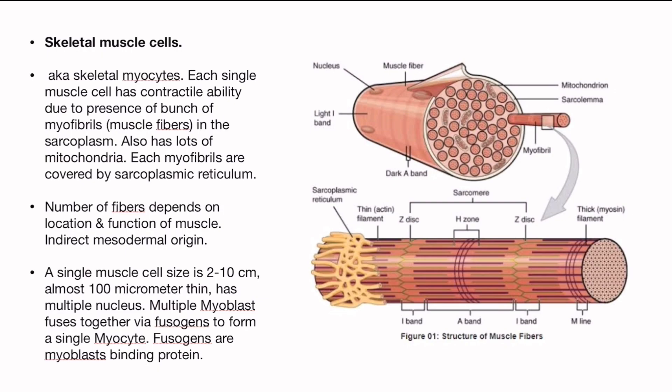A single muscle cell has multiple nuclei. Actually, multiple myoblasts fuse together via fusogen to form a single myocyte. Fusogen — these are a kind of myoblast binding protein. Ek myocyte ka aakar hota hai dho se leke 10 centimeter tak, aur yeh 100 micrometer chikna hota hai — itna chikna ki isko dekhne ke liye microscope chahiye.